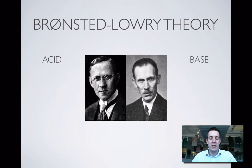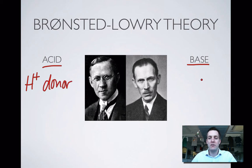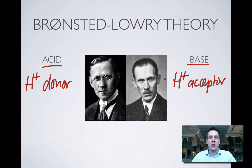Here are Bronsted and Lowry, and here's how they defined acids and bases. They had in common with Arrhenius the fact that H-plus ions were around, but they defined acids as H-plus donors, and they defined bases as H-plus acceptors. The advantage of this was that it described acid-base reactions that weren't happening in solution. Arrhenius' definitions included the fact that acids and bases had to be in solution. Not all acid-base reactions happen in solution, so this theory was an advance on what Arrhenius had said. It's an important definition to learn — you'll use this definition much more than you will use the Arrhenius one.